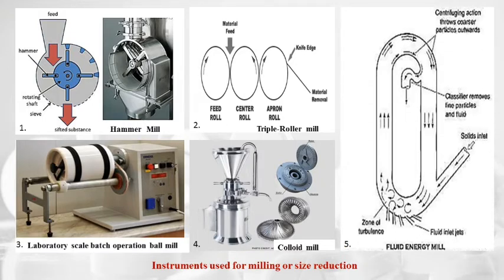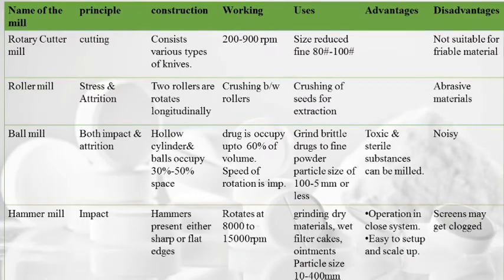The fluid energy mill, also referred to as a jet mill, contains a hollow housing with a diameter of 20–200 cm. A fluid, usually air, is injected at very high pressure forming a turbulence zone. When feed passes through this turbulent zone, particle-to-particle impaction is achieved and size reduction occurs by impaction and attrition. Centrifugal action throws coarser particles outward while the classifier removes fine particles.